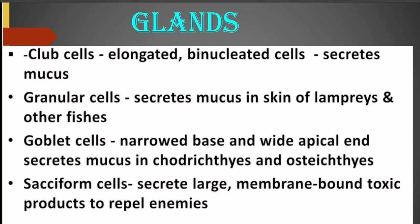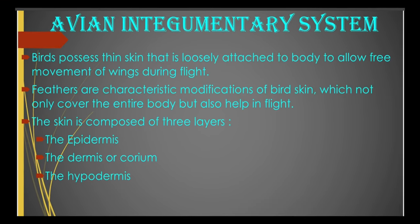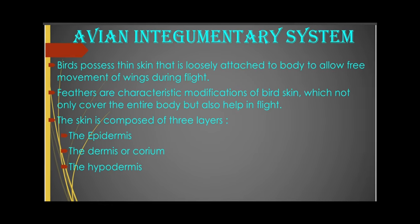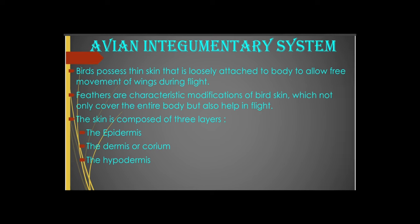A good look at the skin of the birds reveals that birds possess thin skin that is loosely attached to the body, and this allows for free movement of the wings during flight. The birds have feathers, and feathers are very characteristic modifications of the skin of the bird. The feathers not only cover the entire body but are very useful as far as flight is concerned. The skin of the bird has three layers.